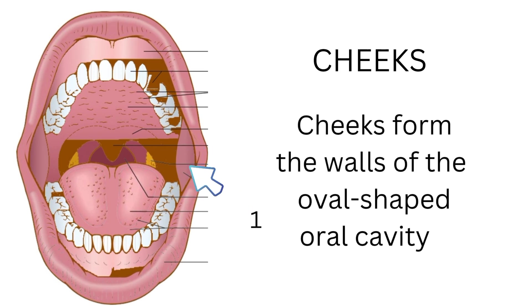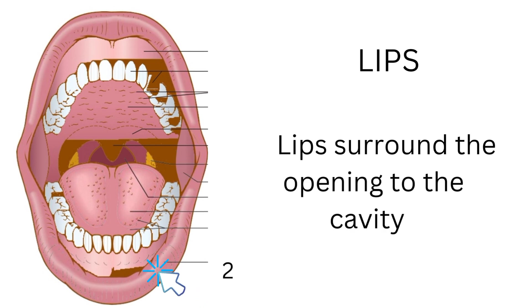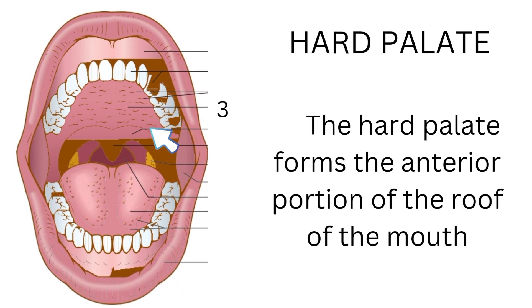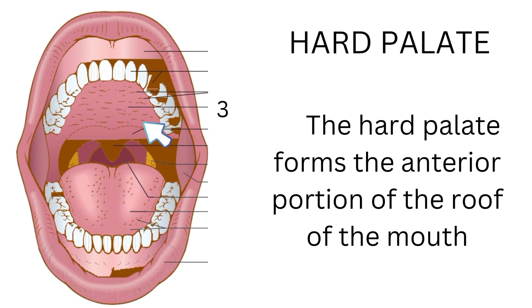Cheeks form the walls of the oval-shaped oral cavity. Lips surround the opening to the cavity. The hard palate forms the anterior portion of the roof of the mouth.